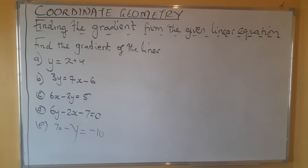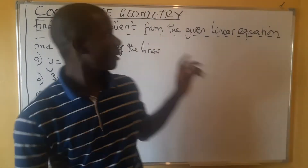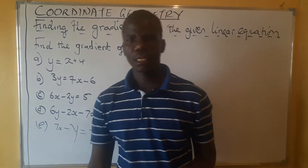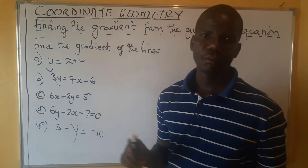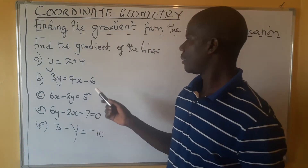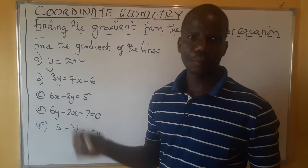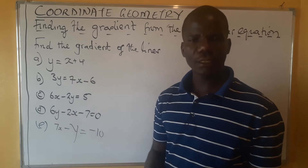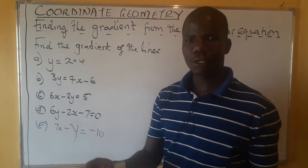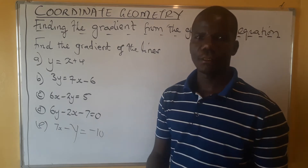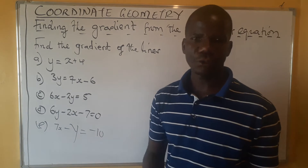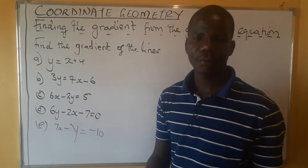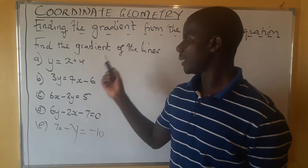Hello. Welcome to another lesson in this topic called Geometry. Now we are looking at how to find a gradient when you are given a linear equation. In the previous lesson we looked at when you are given two points, how do you find a gradient. Now we want to look at a case where you have the linear equation and they want you to find a gradient — how do we identify the gradient?